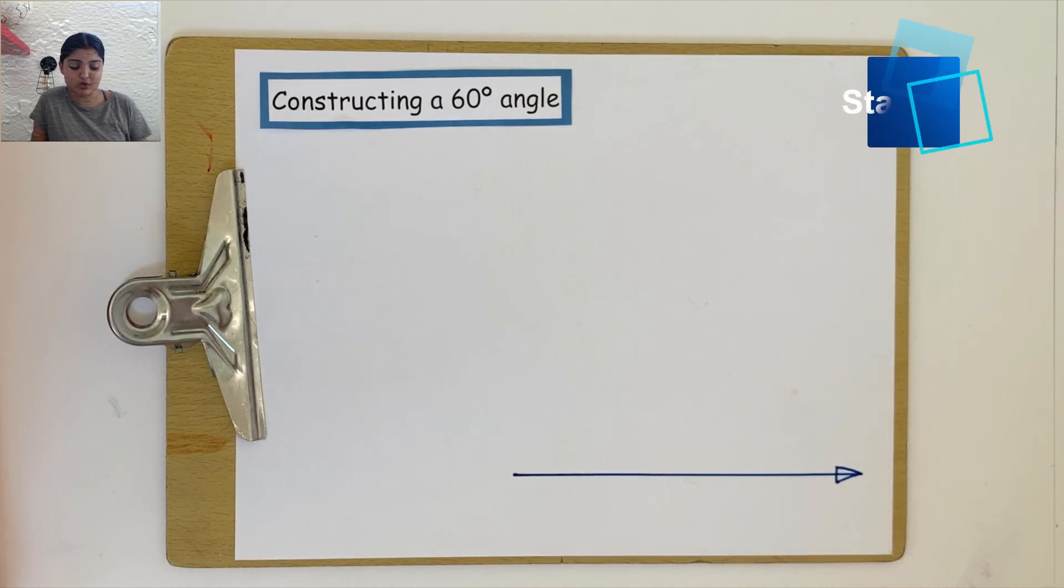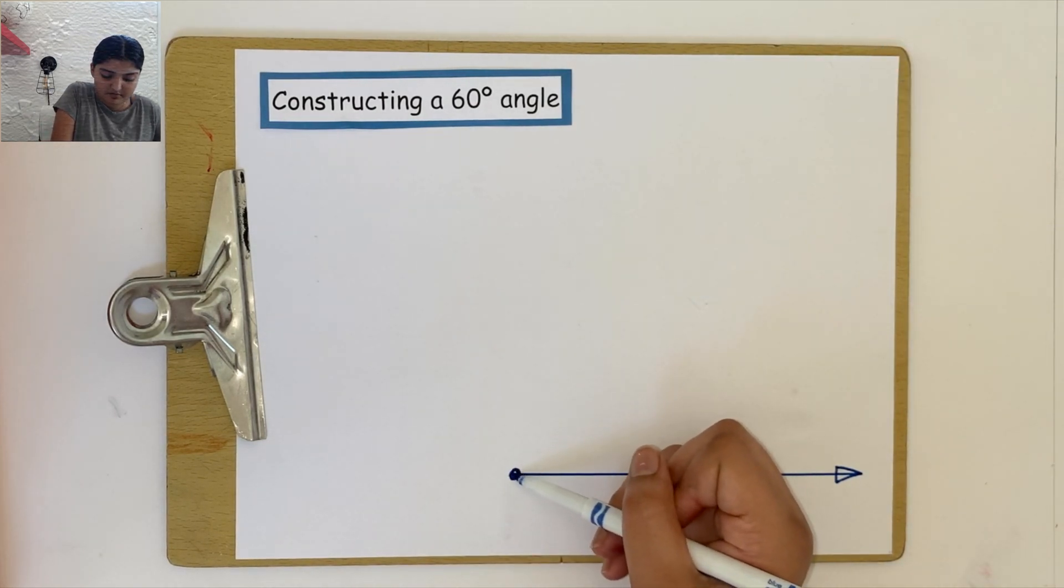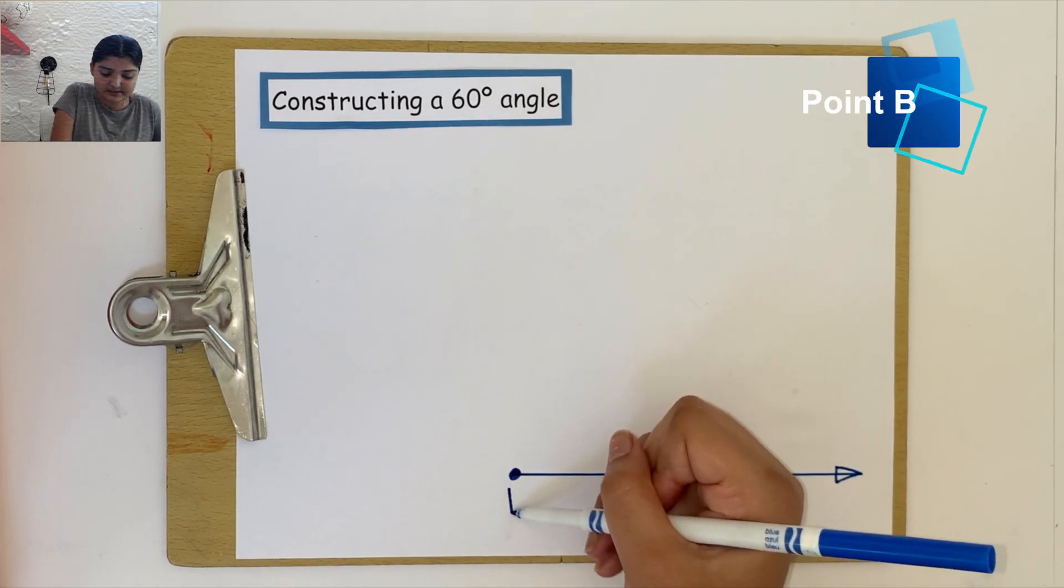Next, let's make a point at the end of this line and label this as point B.